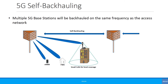In 5G, there is another concept of self-backhauling, similar to in-band backhauling in LTE. Because 5G will have dense deployment, we cannot have fibre connecting every base station. We might have fibre connecting one base station, which then connects to three or four others via self-backhauling. The other base stations backhaul onto each other, with one connected to the main base station via fibre. The main challenge would be managing interference.